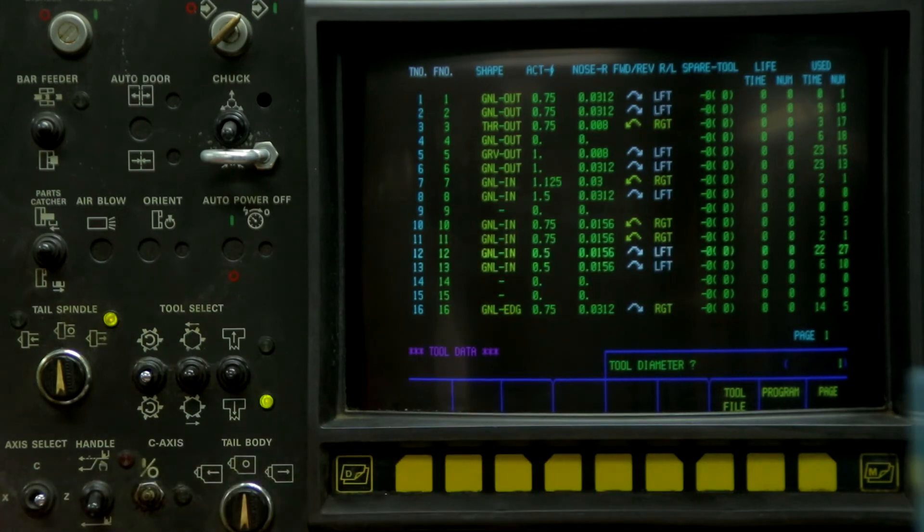Tool diameter is the shank width, 1 inch. The nose radius is 0.0312.